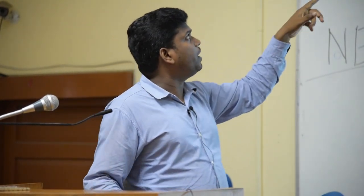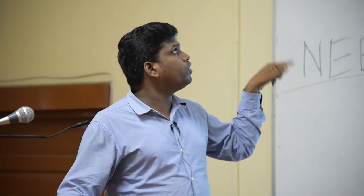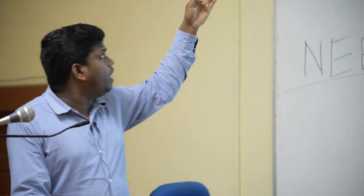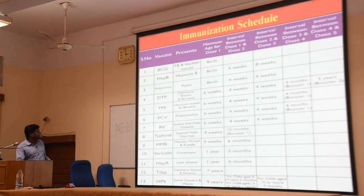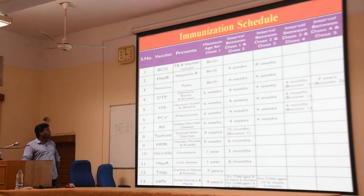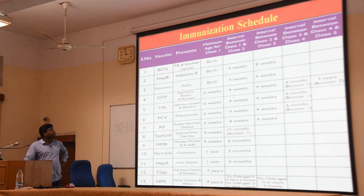There is a table showing the immunization schedule that we all must know about. It lists different types of vaccines and the diseases which are going to be prevented by the help of these vaccines.